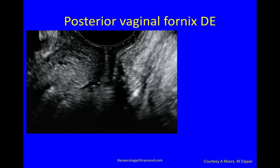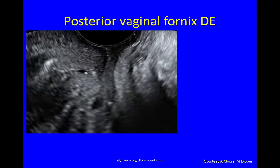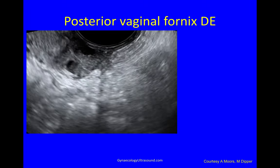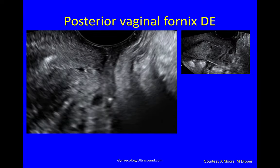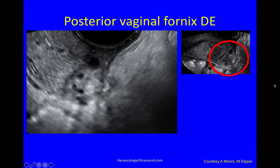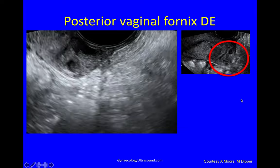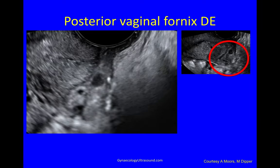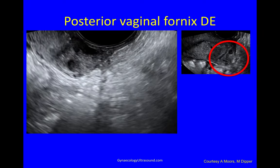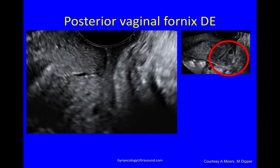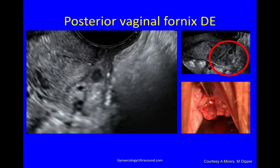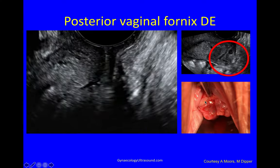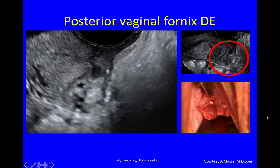Looking at the vagina: with the transvaginal probe being inserted just behind the cervix, you can see a nodule of deep endometriosis actually in the vagina. If you don't look while you're putting your probe in, you'll miss it — you've got to look when inserting the probe. Here the posterior vaginal fornix is abnormal, and on speculum examination you can just see this bluish nodule through the epithelium, but you could miss that.